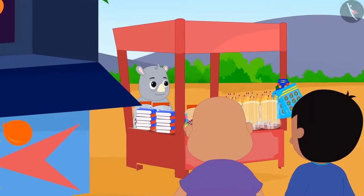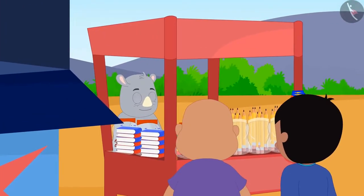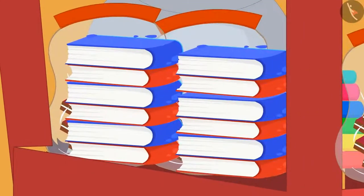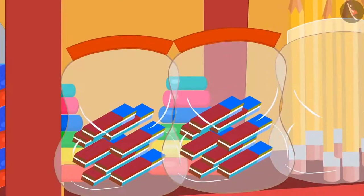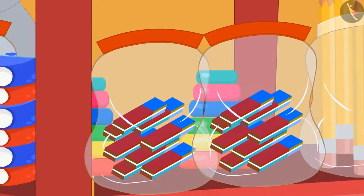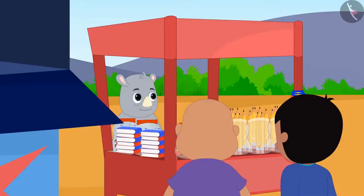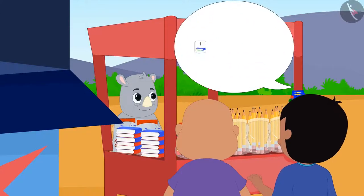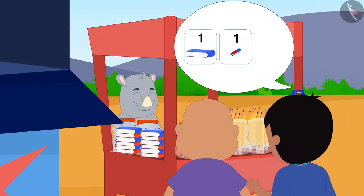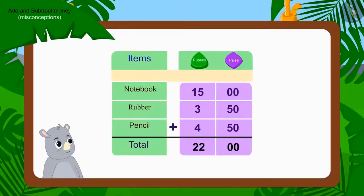Raju and Bablu have come to Gaggu's shop to buy notebooks, pencils and some other items. Raju asked Gaggu for one notebook, one rubber and one pencil. Gaggu added the value of all three items in this way.